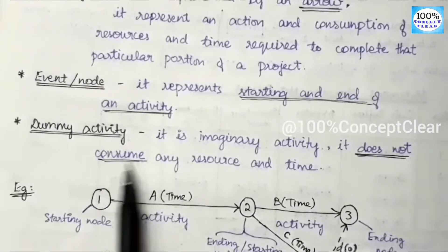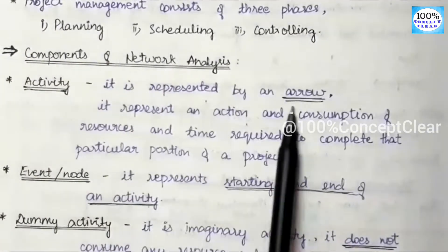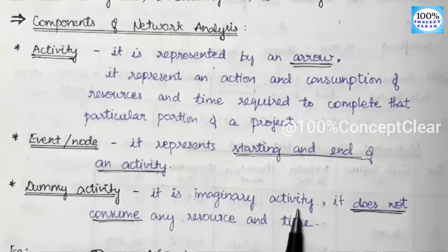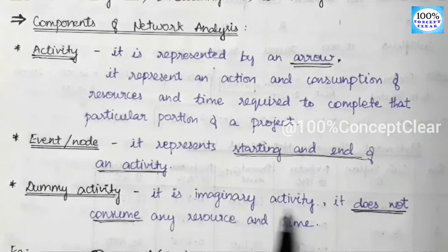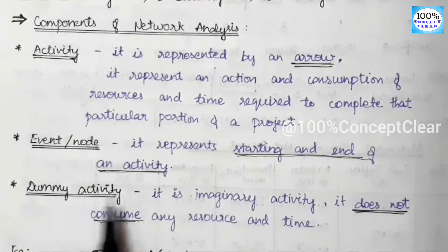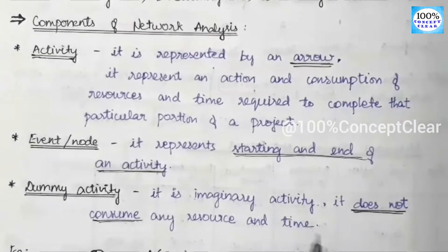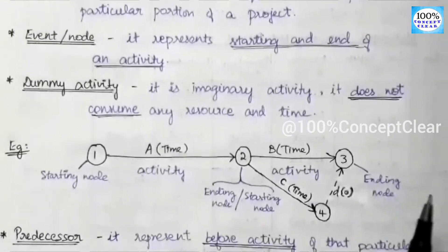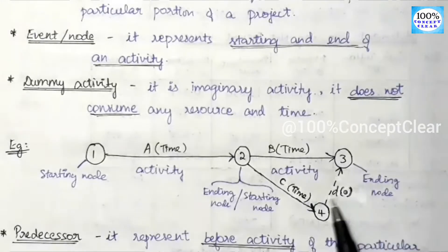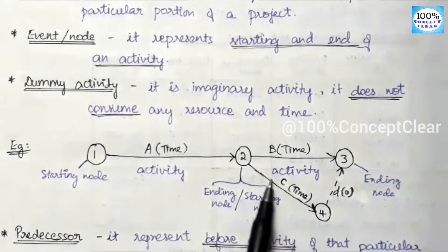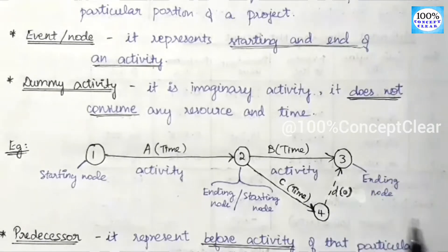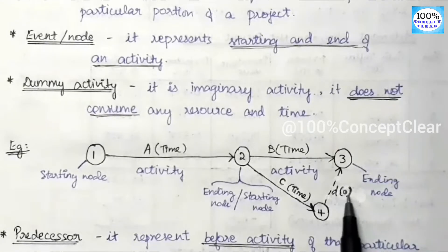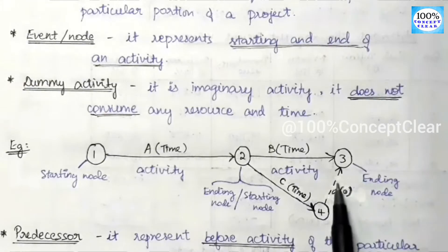The next component is dummy activity. A dummy activity is an imaginary activity — it does not consume any resource or time. For dummy activity, the duration is zero, represented by a small 'd'. In the network diagram, a normal activity uses a normal arrow mark, while a dummy activity uses a dotted arrow mark.